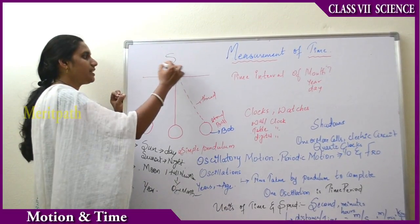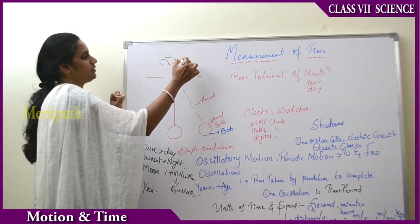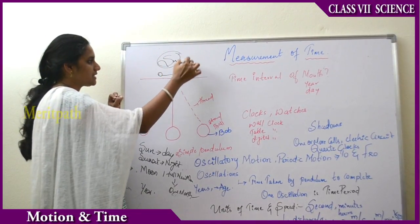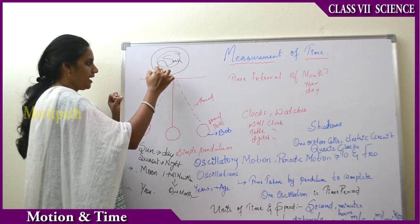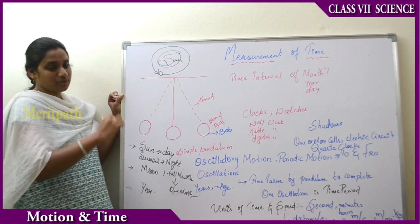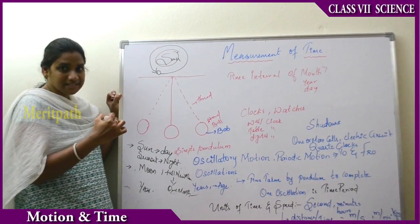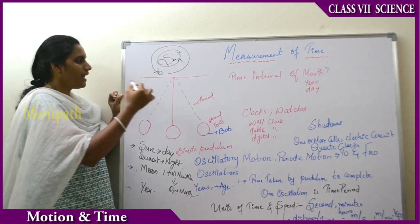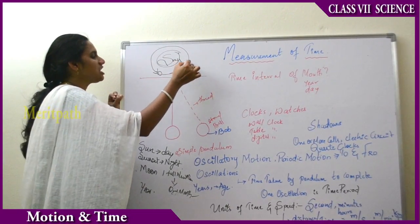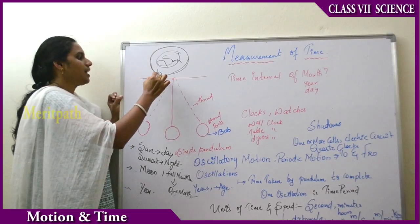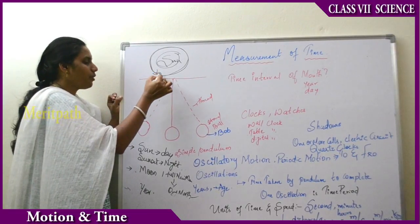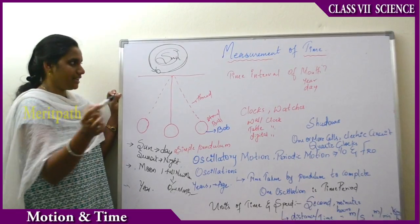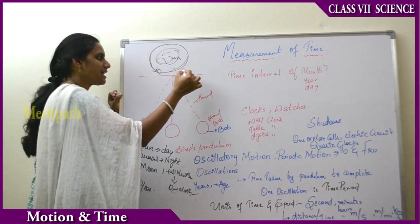The sun is the center of our universe, and the earth is moving around the sun. The earth is rotating on its own axis and at the same time it is revolving around the sun. Therefore, one complete revolution of the earth around the sun is said to be one year. It is calculated as a year.